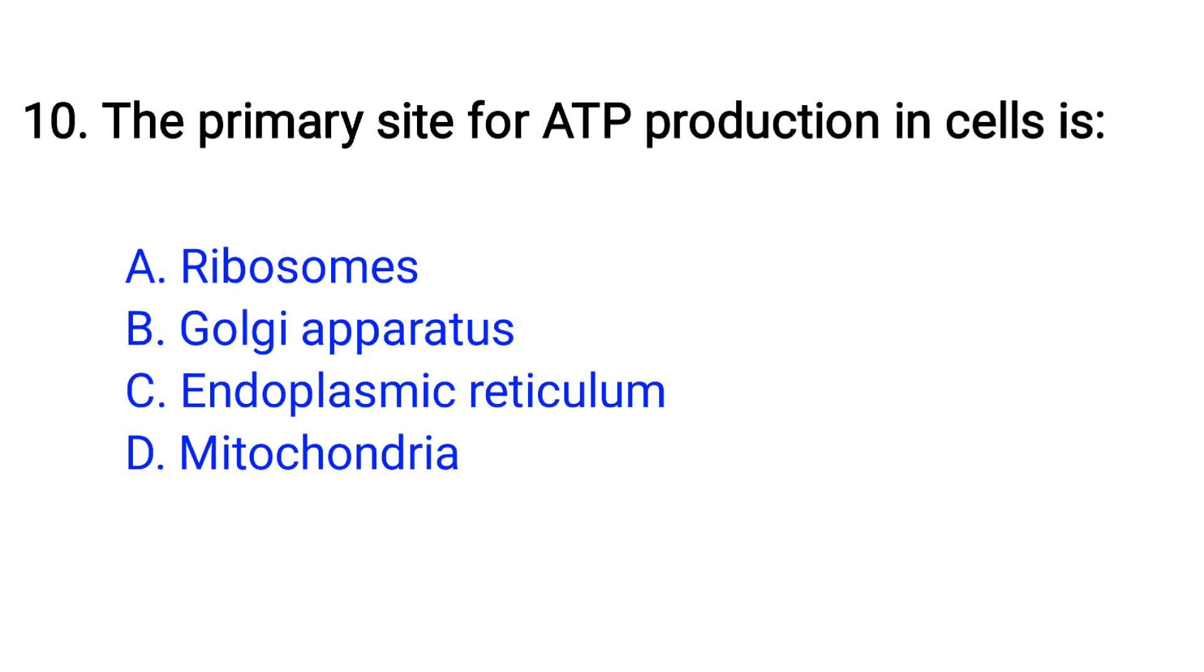Question number 10. The primary site of ATP production in cells is? Option A: Ribosomes, B: Golgi apparatus, C: Endoplasmic reticulum, D: Mitochondria.